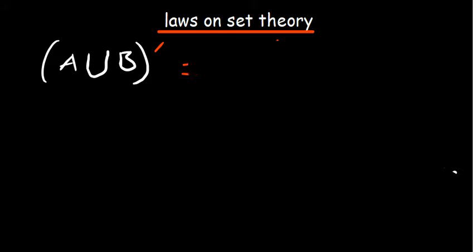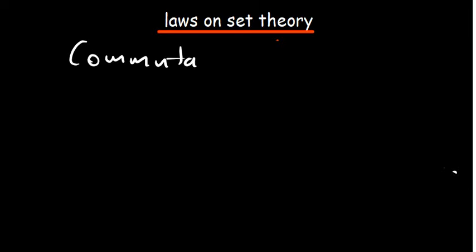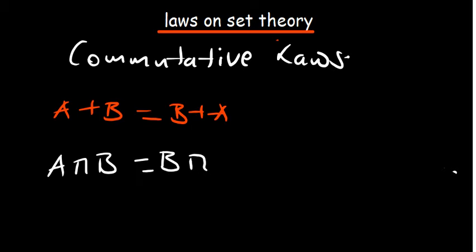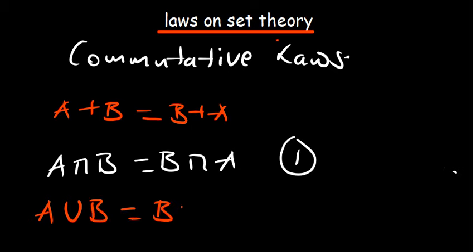Apart from De Morgan's laws, we also have what we call commutative laws. Commutative laws tell us that A plus B is the same as B plus A. In terms of our sets: A intersection B is the same as B intersection A. The second commutative law is A union B is the same as B union A.